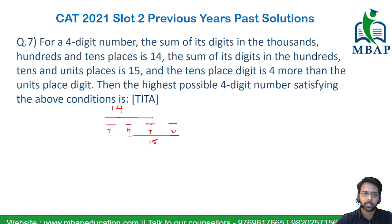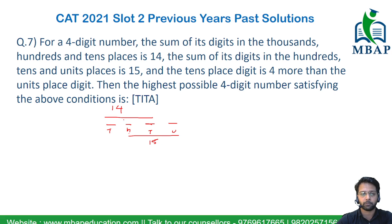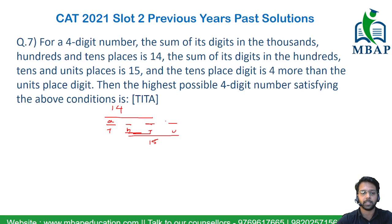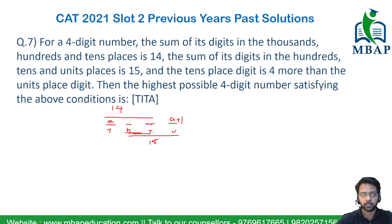So it's obvious that the difference between the units digit and the thousands digit will be 1, because the sum is increasing from 14 to 15 — increasing by 1 — while the two common terms are exactly the same. Let me assume the thousands digit as 'a', so the units digit will be 'a+1'. It has also been given that the tens digit is 4 more than the units place, so the tens digit will be 'a+5'.